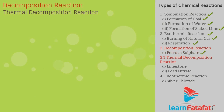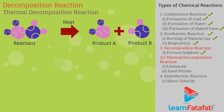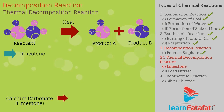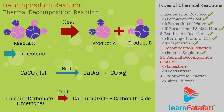Thermal decomposition reaction: When a decomposition reaction is carried out by heating, it is called thermal decomposition. Example one — decomposition of calcium carbonate to calcium oxide and carbon dioxide. Calcium oxide is lime or quick lime, used in the manufacture of cement: CaCO3 (heat) → CaO + CO2.